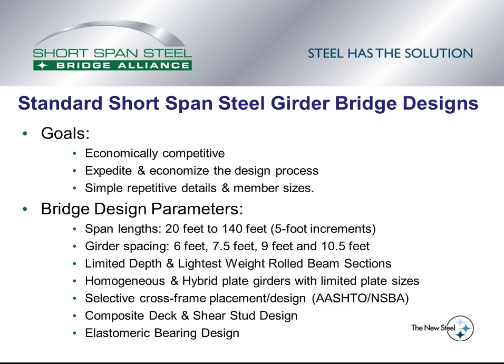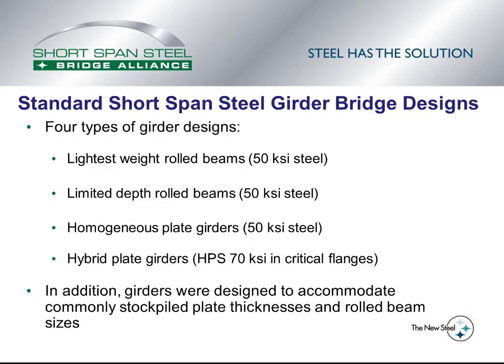The Shortspan Steel Bridge Alliance develops standard short span steel girder bridge designs. The goals are to create economically competitive designs, expedite and economize the design process itself, using simple repetitive details and member sizes. The bridge parameters considered are span lengths between 20 and 140 feet in 5-foot increments, four different girder spacings at 6 feet, 7.5, 9, and 10.5 feet, considering both limited depth and lightest weight rolled beam sections, homogeneous and hybrid plate girders with limited plate sizes, selective cross frame placement per AASHTO-NSBA collaboration documents, composite deck and shear stud design, and elastomeric bearing designs.